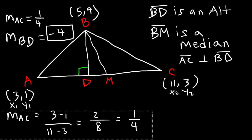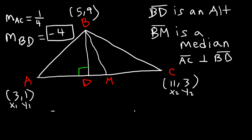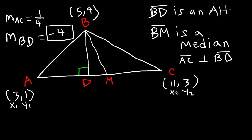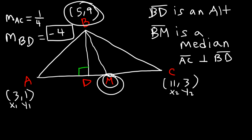Now how can we calculate the slope of the median? The median is not perpendicular to AC, so we can't use that approach. However, the median extends from the vertex to the midpoint of the opposite side. Knowing that M is the midpoint of AC, we can find that midpoint. If we have two points, that's all we need to calculate the slope of a line.